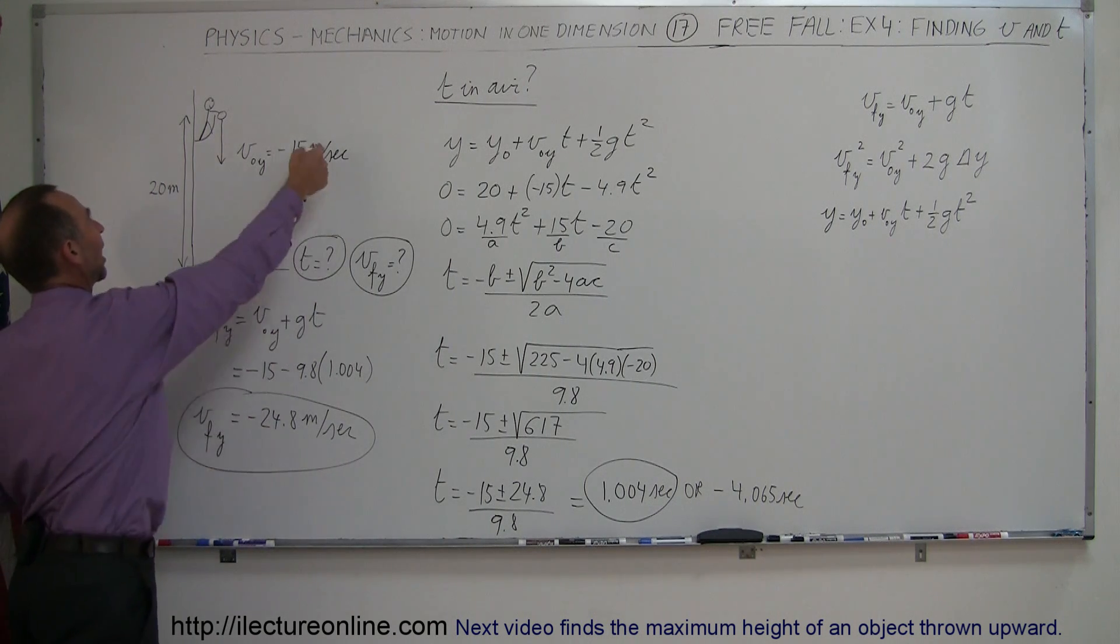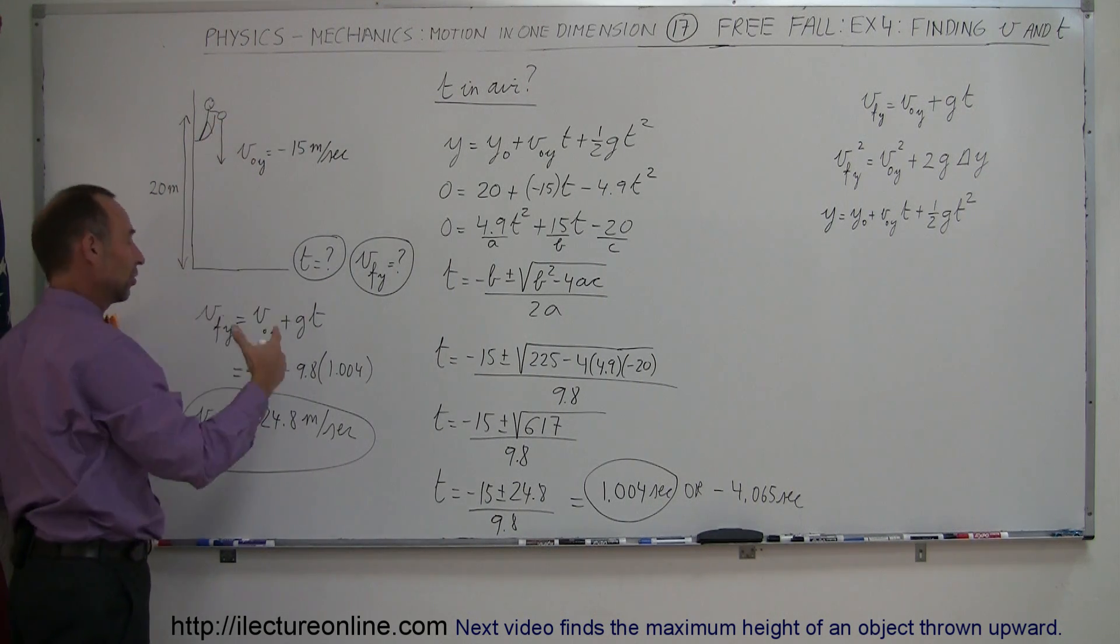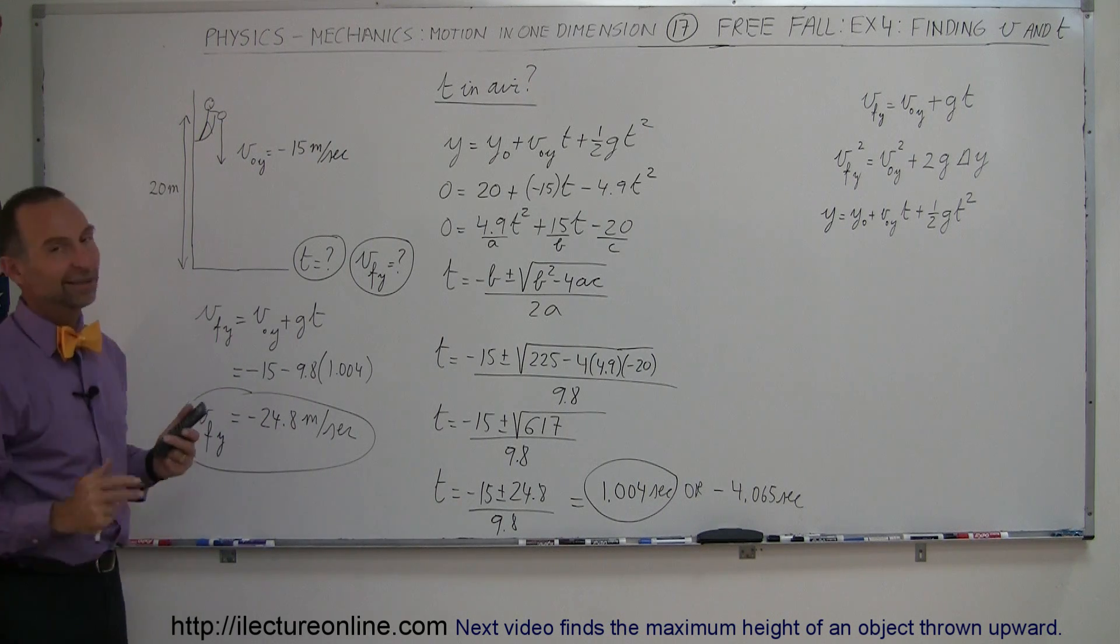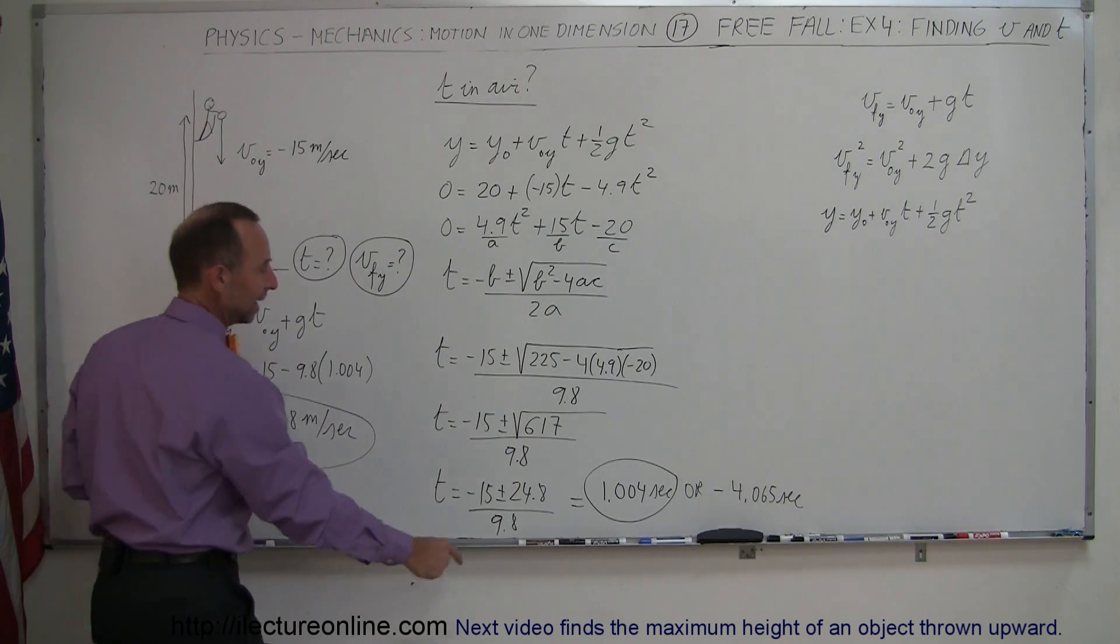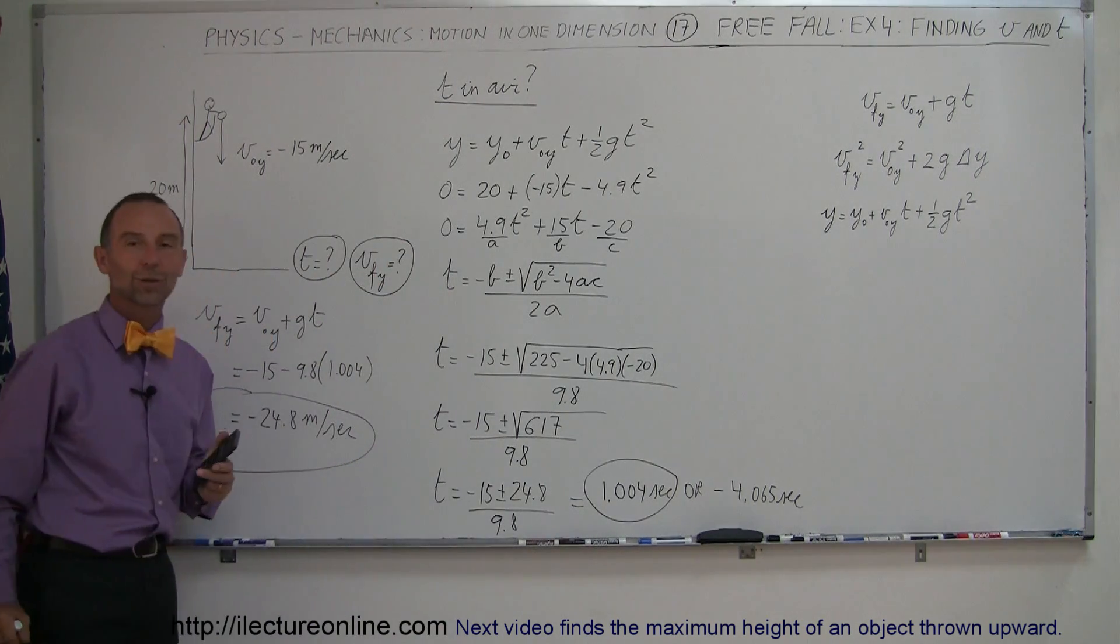So the rest of the problem then looks exactly the same as what we have here. So that's why it's not surprising that we have the same answer. So the final minus 24.8 meters per second, and it takes just over a second for it to reach the ground.